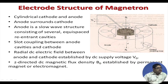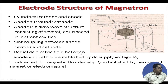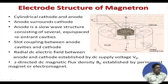There are slot cuts between the anode cavities and cathode. Through these slots, the electrons emitted by the cathode interact with the re-entrant cavities. A radial DC electric field exists between anode and cathode, established by DC supply voltage V₀. The field is radial because anode and cathode are cylindrical structures. There is also an axially directed DC magnetic flux density B₀ established by either a permanent magnet or electromagnet.